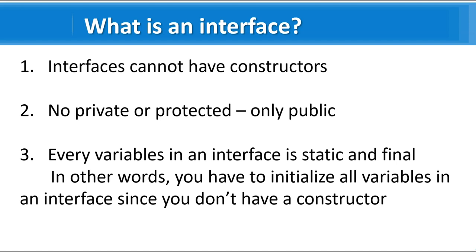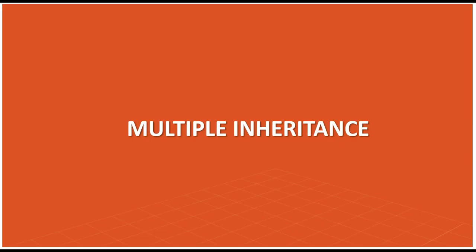Let's understand what multiple inheritance is and what the problem is if you try it with normal classes, and why it is supported with interfaces and is not a problem there. Multiple inheritance is a case where you have one child class inheriting from more than one parent class. Let's look at this in Online GDB.